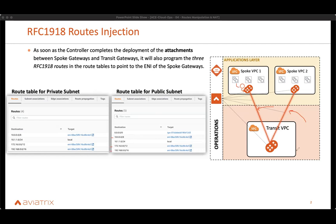The reason this is important is when you're doing migration. Just launching an SPO and a transit does not do anything on its own. Only when you go and do the attachments do the RFC 1918 routes show up in the routing table of the VPC. We do it for both the public as well as the private subnets. This happens by default — you don't need to do anything for this behavior to actually happen.